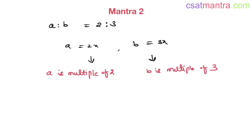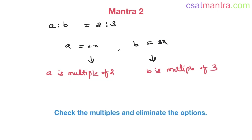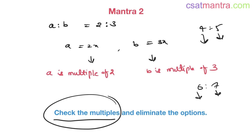Second observation: a is a multiple of 2 and b is a multiple of 3. So in the options, the first term should be a multiple of 2 and the second term should be a multiple of 3. For example, if the ratio is 4 is to 5, the first term should be a multiple of 4 and the second term should be a multiple of 5. Check the multiples and eliminate a few more options.